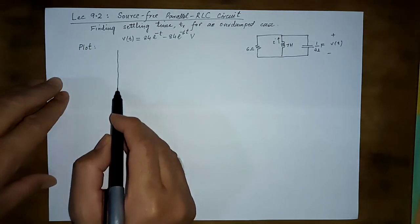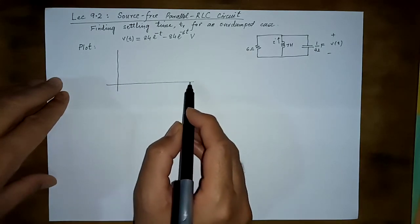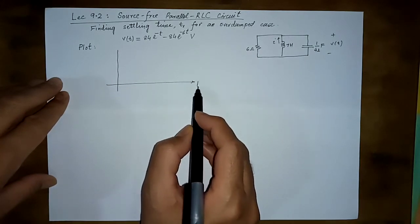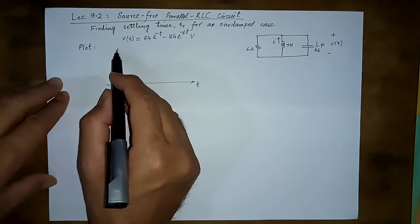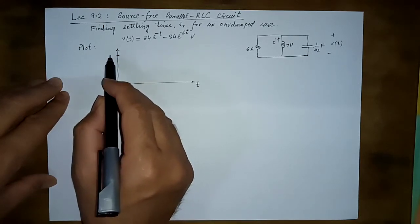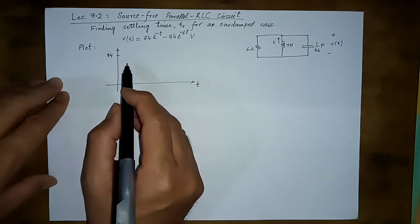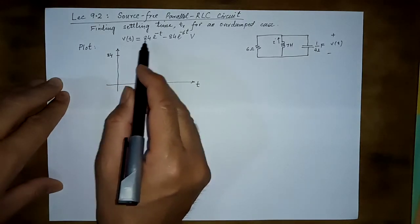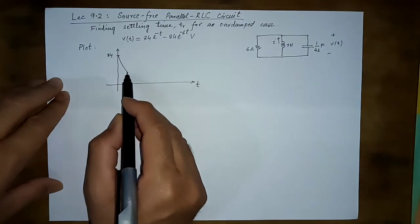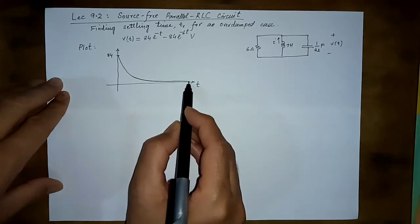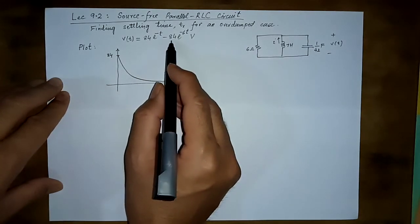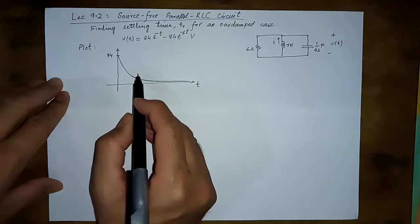To get a better idea, we can plot each of the exponential terms separately first. For example, this term would be something like this, or rather let us take this term to be something like this because we have taken a quicker decay.